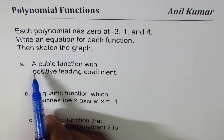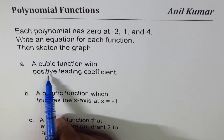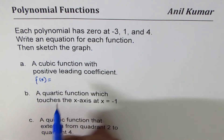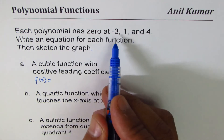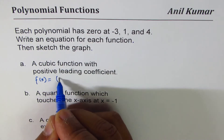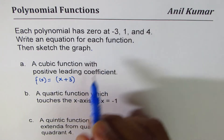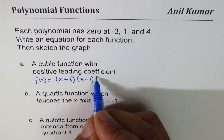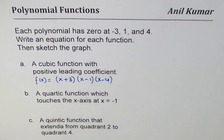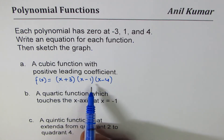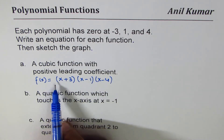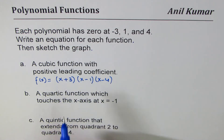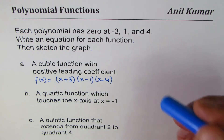The first one is a cubic function with positive leading coefficients. We can say f of x equals — these are the zeros. Three zeros for a cubic function: x plus 3 (that means zero at minus 3), times x minus 1 (zero at 1), times x minus 4. So we get these three zeros. That becomes a cubic function with positive leading coefficient, since if you multiply x times x times x, we get x cubed with leading coefficient 1, which is positive.